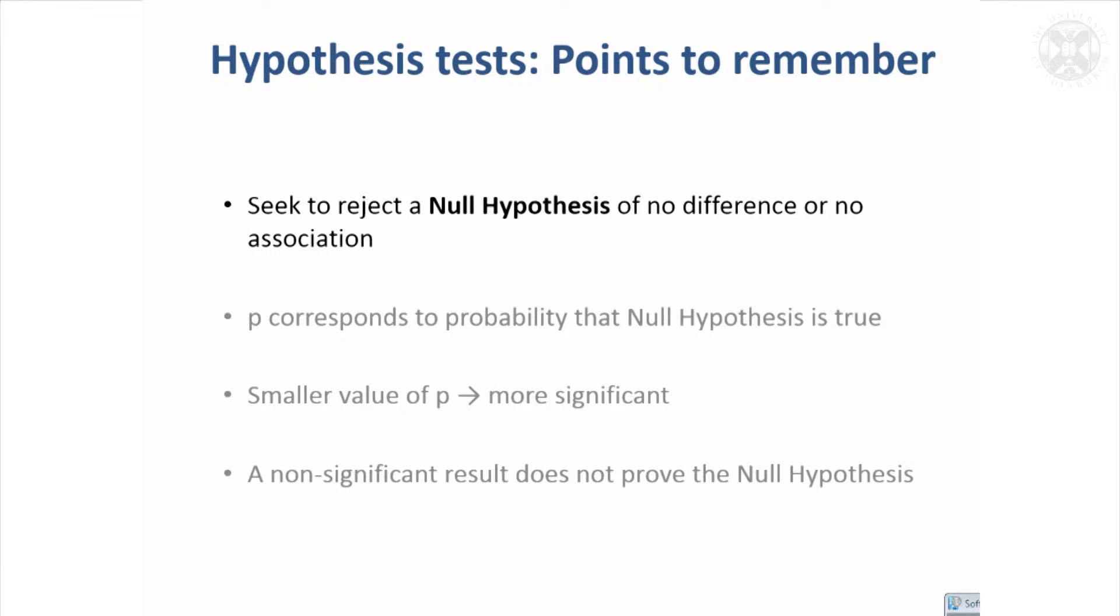You're seeking to set a null hypothesis and to reject that to show statistical significance. The p-value is a probability that the null hypothesis is true. That's what it's actually measuring, and the smaller the p-value, the more significant you would say the result is.